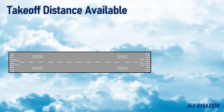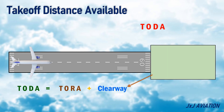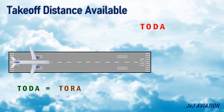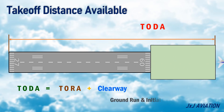Takeoff distance available, TODA: this is the sum of the length of takeoff run available and the length of the clearway, if available. If there is no clearway, the takeoff distance available and the takeoff run available are the same. This distance is applicable for the ground run and the initial climb of an aircraft.